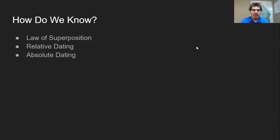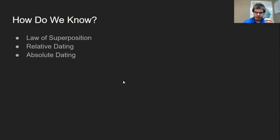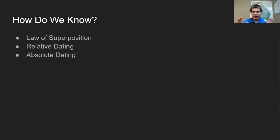How do we know how old something is in geologic time? How do we know that at this time right here there were plesiosaurs roaming the water? How do we know what lived at what time? This is probably the part that most people get tripped up about — like, how do we know that the dinosaurs went extinct 67 to 65 million years ago? How do we know the earth is 4.54 billion years old? There are three big ways that we know.